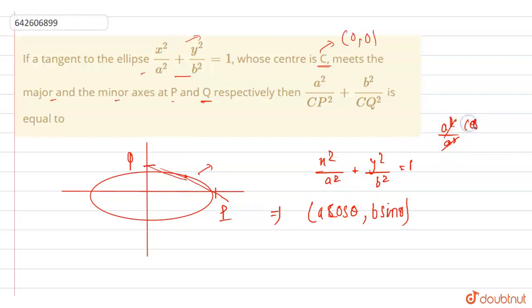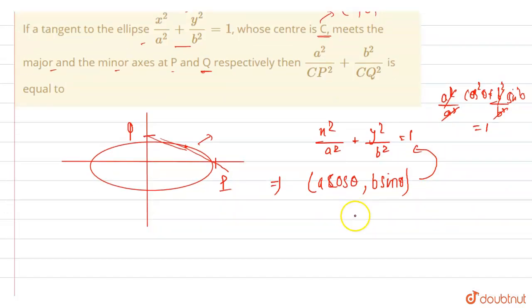So A square A square is cancelled and this is cos theta square. Plus B square by B square. This is also cancelled and we have sin theta square. And this sum is equal to 1. So we have LHS equals to RHS. So this point generally lies on this ellipse.